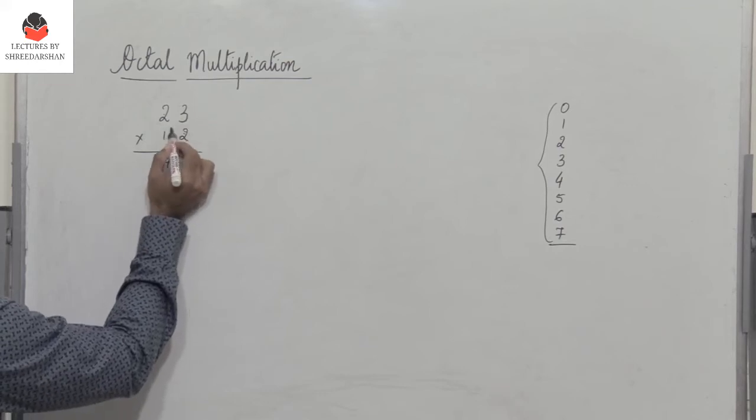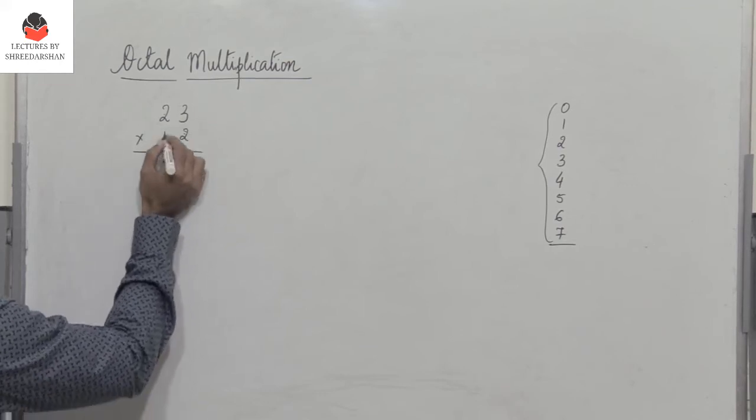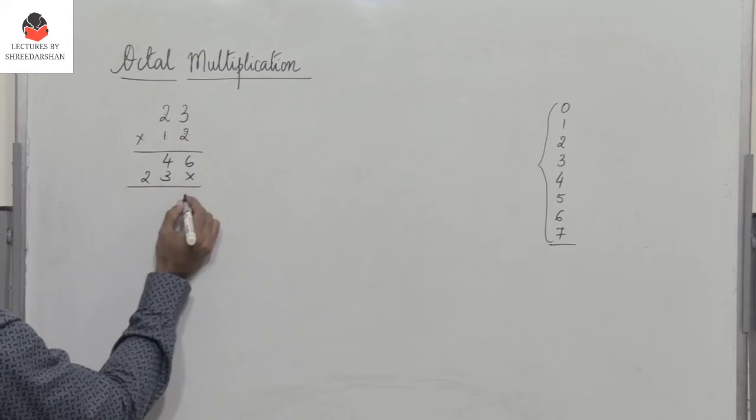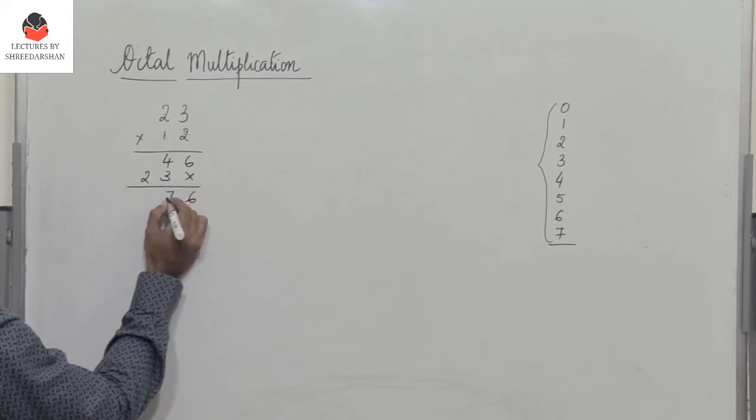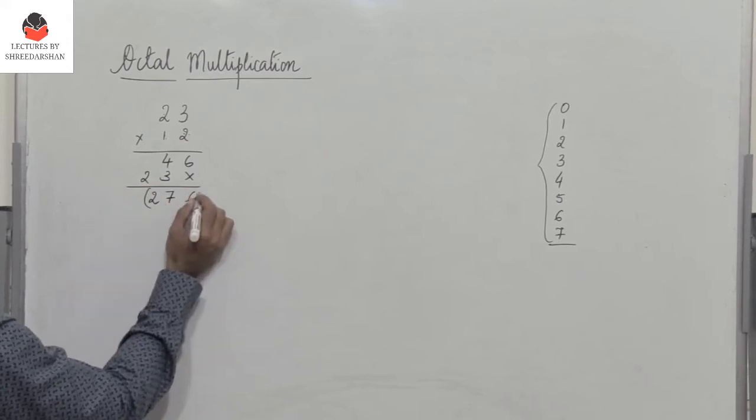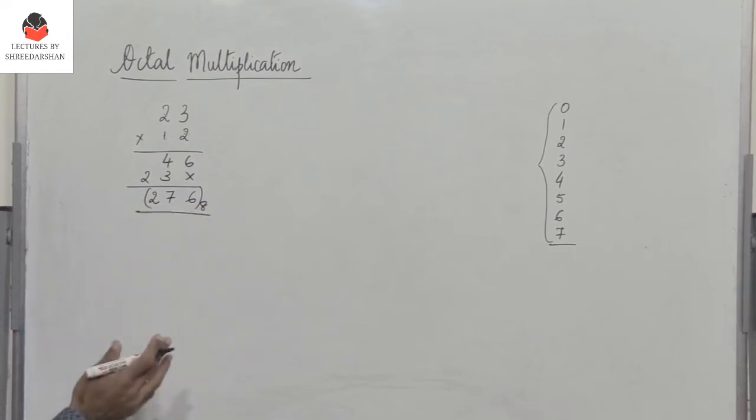Then you have 2. 1 into 3 is 3. 1 into 2 is 2. I add them. So you get 672. So this is the answer. Very simple. So the process of multiplication is as we do in decimal multiplication.